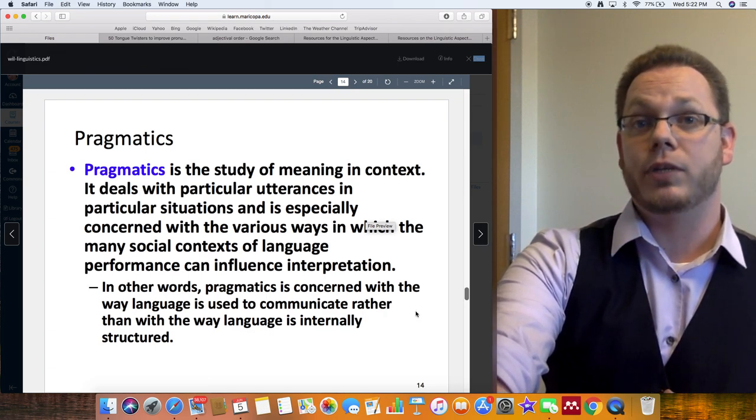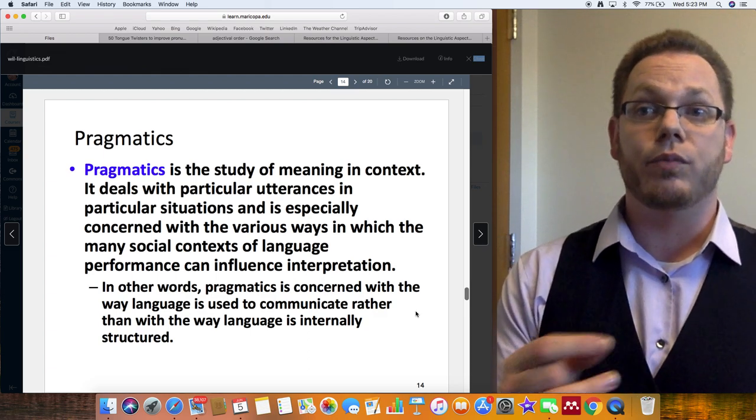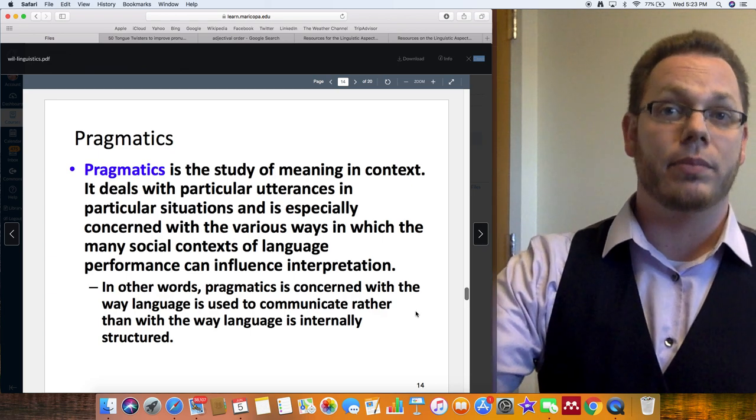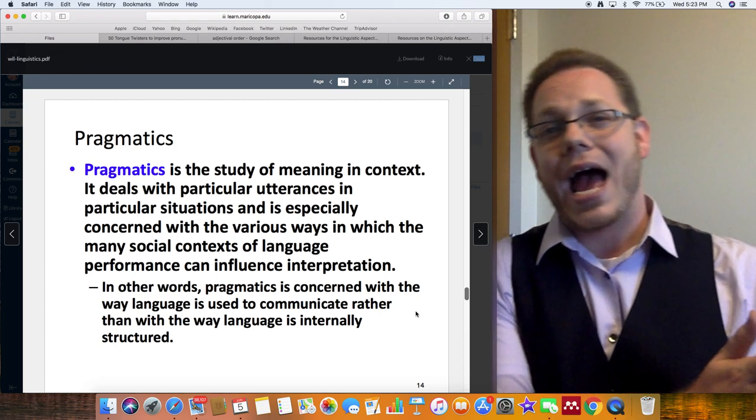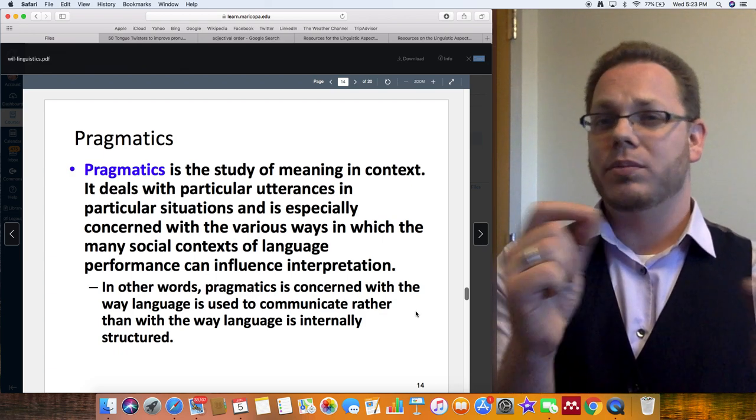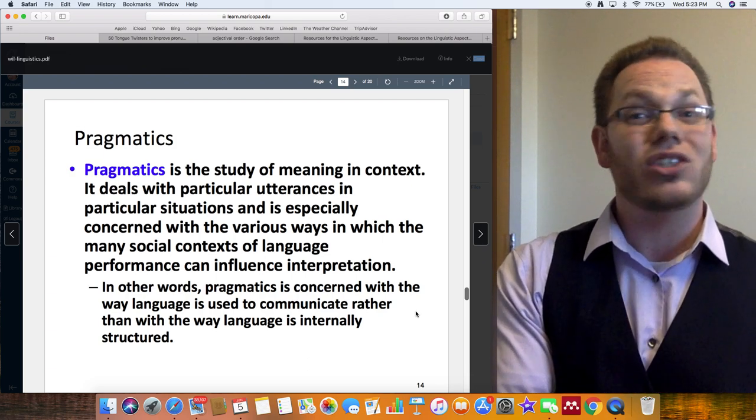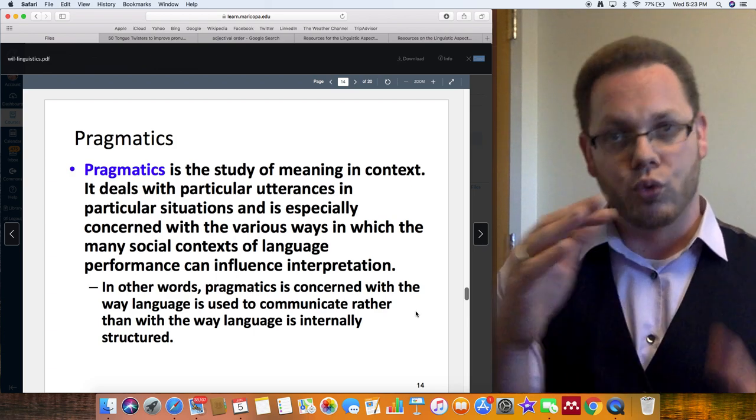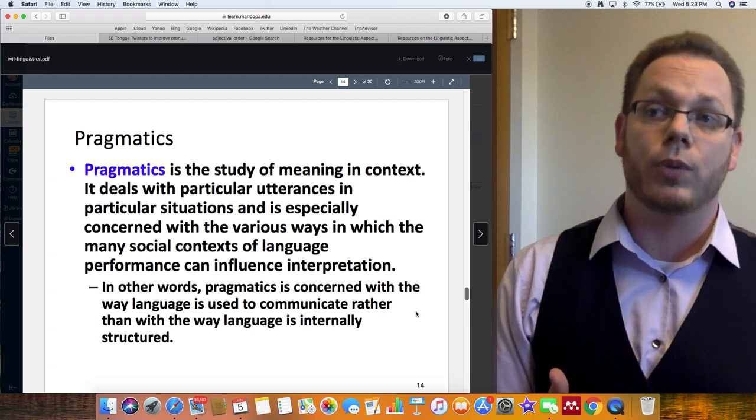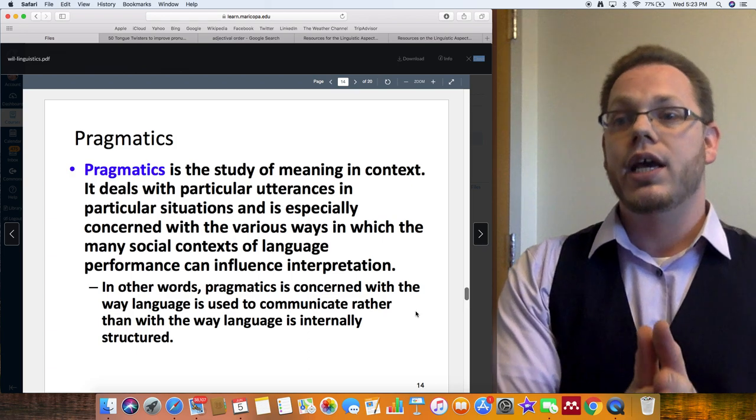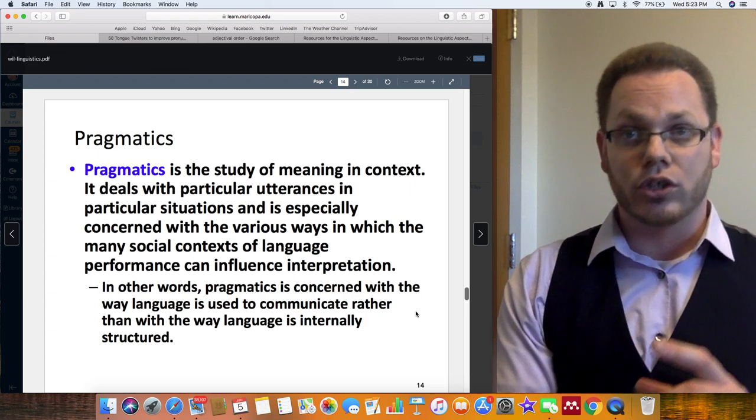I kind of want to give pragmatics its own special thing. Three, two, one, go. All right. So with pragmatics, I'm going to try and just roll through this quickly. Pragmatics is the study of meaning and context. It definitely ties with semantics. Here's the thing. Semantics is dealing with webs of words and context. Pragmatics is also pushing to how the practical use of language. So sometimes it may be confusing because semantics is built on context and so is pragmatics. Pragmatics is how do people practically use language in a particular social context. Not what rules they're supposed to use, but how they practically use language. So if we look at the slide, it deals with particular utterances in particular situations and especially concerned with the various ways in which the many social contexts of language performance can influence interpretation. In other words, pragmatics is concerned with the way language is used to communicate rather than with the way language is internally structured.